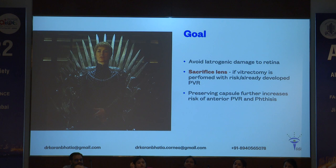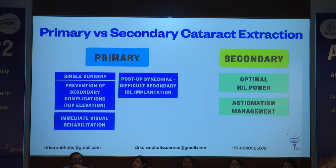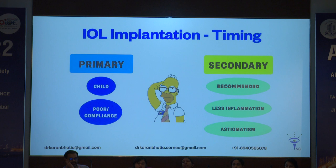The goal is to prevent iatrogenic damage to the retina and sacrifice the lens if a vitrectomy is performed with risk or already developed PVR. Preserving the capsule further increases the risk of anterior PVR and phthisis. Regarding primary versus secondary cataract extraction: primary is a single surgery — it prevents secondary complications like IOP elevation and post-operative synechiae. However, optimal IOL power and astigmatism management are only possible with a secondary procedure. Secondary is generally recommended — control the inflammation first.